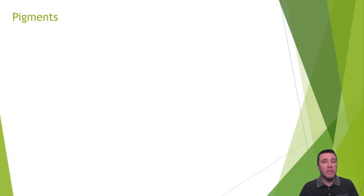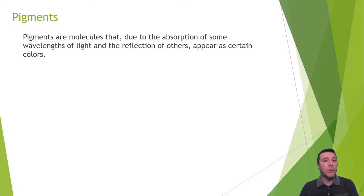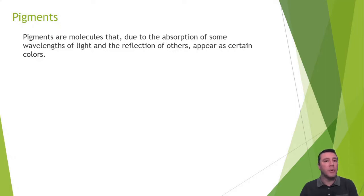Let's take a more detailed look at pigments, specifically plant pigments. A pigment is a molecule that, by selectively reflecting some wavelengths of light and absorbing others, appears as a certain color. An object pigmented blue will absorb wavelengths of light from red to green and a bit of the violet, but the blue light is reflected, making the object appear blue. An object that is red is absorbing all wavelengths of light from violet to blue to green to yellow and even a bit of the orange, but the red is being reflected back to our eyes. Black objects are therefore absorbing all colors of light and reflecting none, while white objects are doing the opposite, reflecting all colors of light and absorbing none.